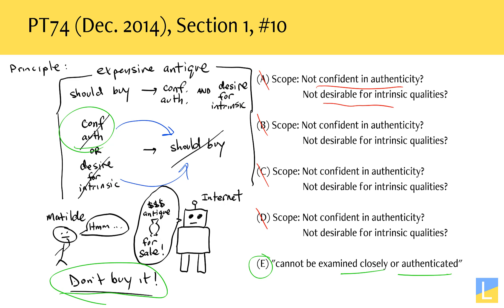Answer choice C says that Mathilde suspects the vase will be highly desirable to other people in the future — but that's not the same as saying she does not desire it for its intrinsic qualities. In fact, another part of answer choice C says she likes its shape and color, which are part of the intrinsic qualities. So the fact that she may have some desire for the vase in part because of its investment qualities is not the same as saying she doesn't desire it for its intrinsic qualities. If you picked answer choice C, you may have misinterpreted that part of the principle: the requirement is that you desire it for its intrinsic qualities — not just for its investment value. It is okay to value it for its investment, but that just can't be the only thing. So there's really no extra important information in the investment part of this principle; I'm only focusing on what is actually required — desiring it for its intrinsic value.